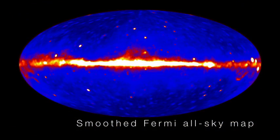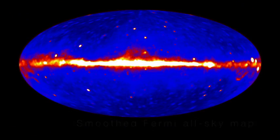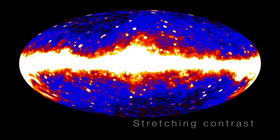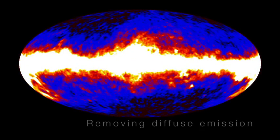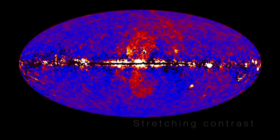These enormous gamma ray-emitting lobes aren't immediately visible in the Fermi all-sky map. However, by processing the data, a group of scientists was able to bring these unexpected structures into sharp relief.